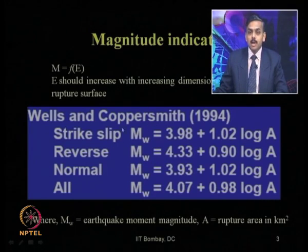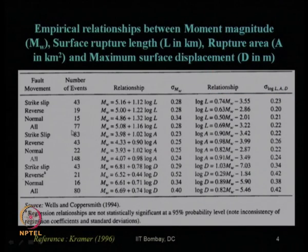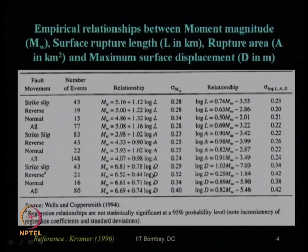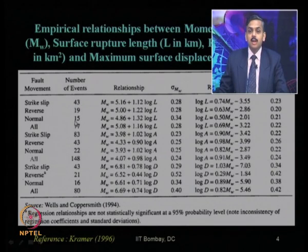When the magnitude of past earthquakes is not available for a particular site, using the present fault characteristics one can easily estimate earthquake moment magnitude using empirical relationships proposed by Wells and Coppersmith. They also proposed similar relationships with respect to surface rupture length in kilometers and maximum surface displacement D in meters — four sets of equations each for rupture length, rupture area, and maximum surface displacement.